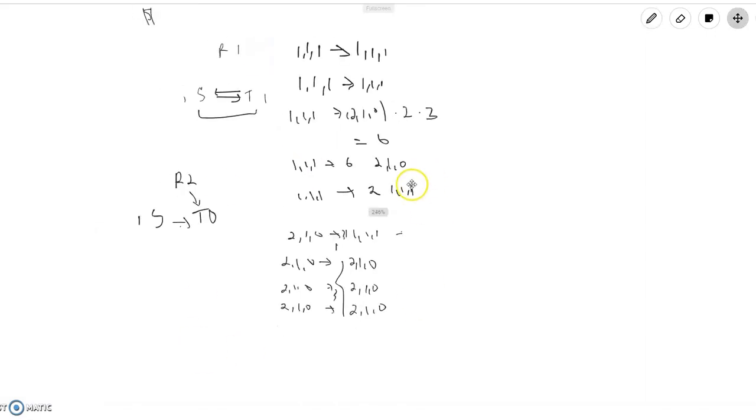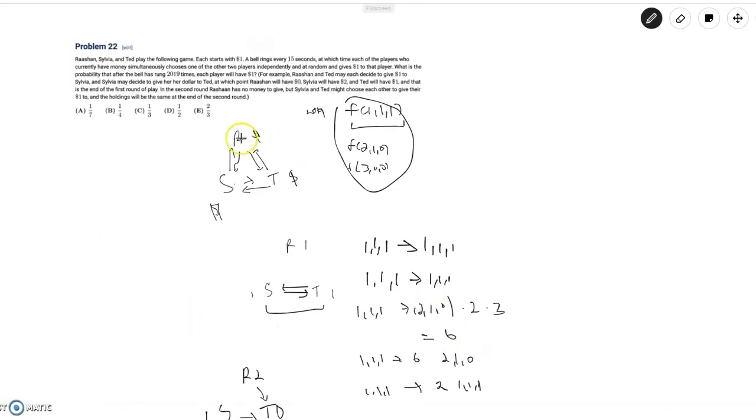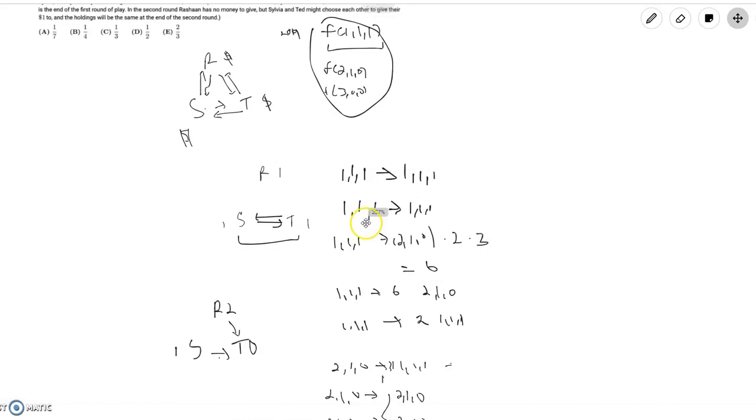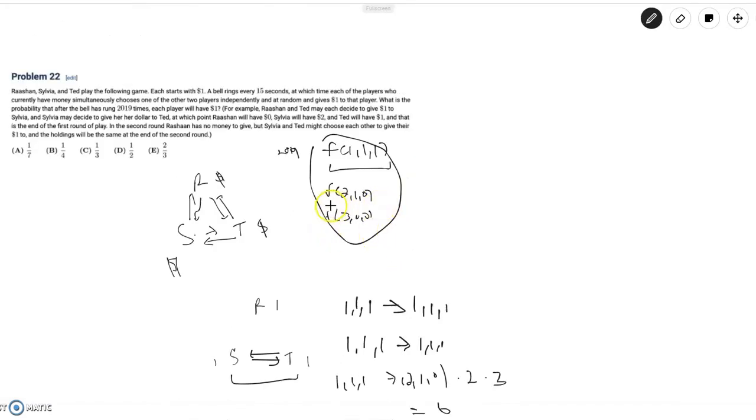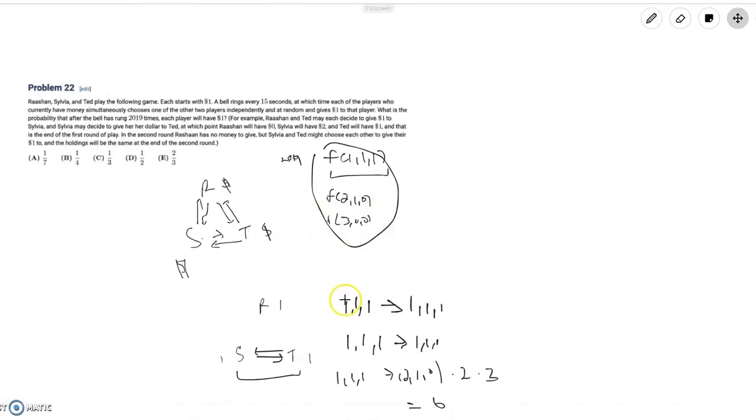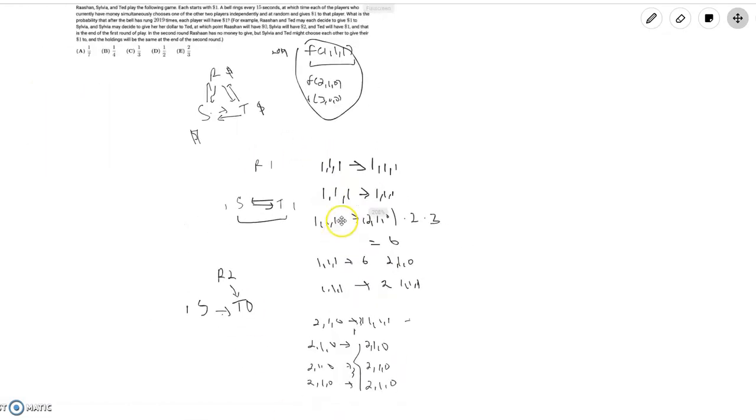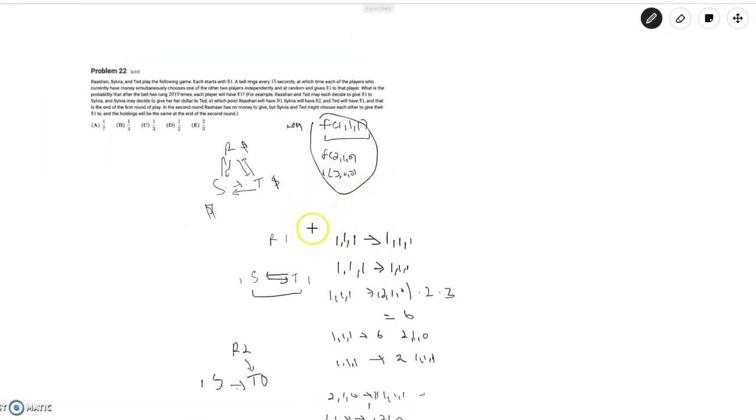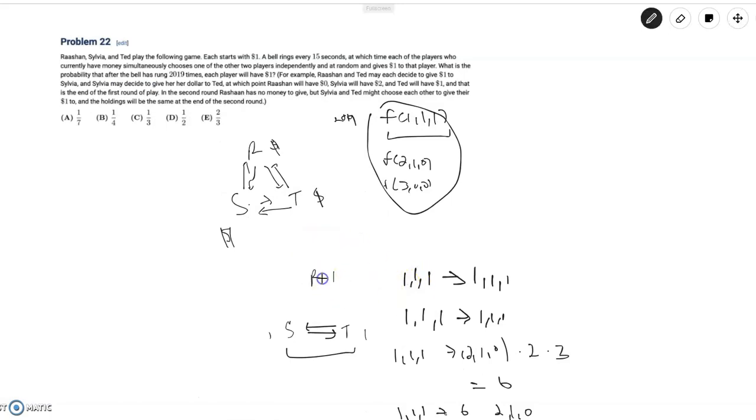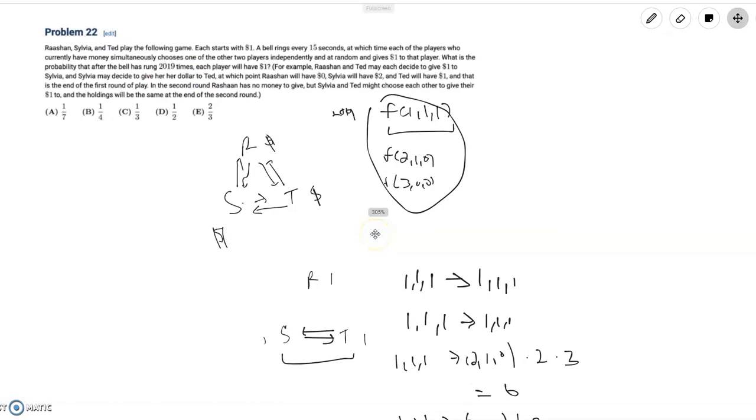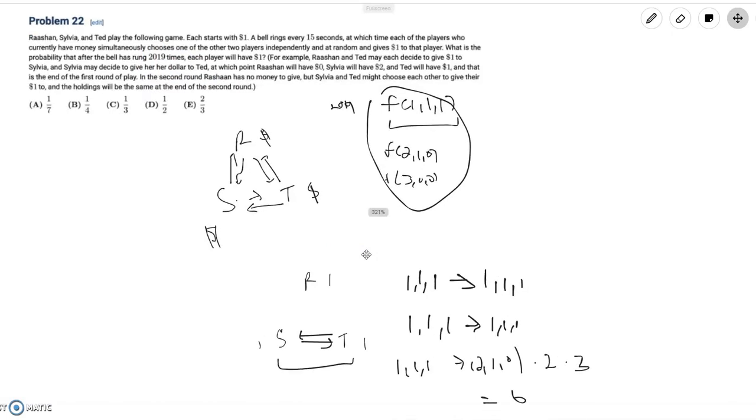So with this in mind, we can start trying to map out our probabilities. And we also notice that we can never get to a state where one player has three dollars, and we've just shown that over here. So we don't have to worry about this. And so let's just try mapping out the probabilities and seeing if we can find a pattern since 2019 is a large number. And usually when you see large numbers like this, large arbitrary numbers, it helps to map out smaller values and see if we can find a pattern to prove or just go with that.